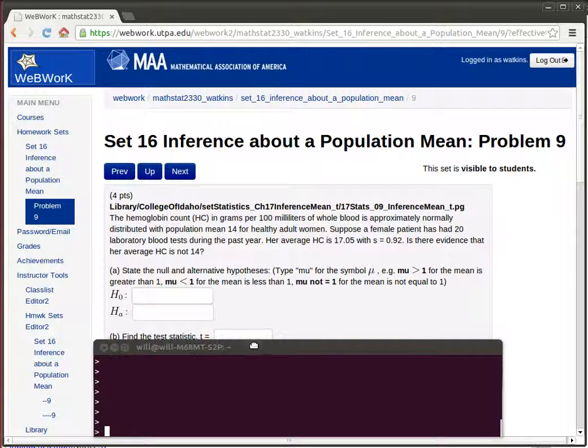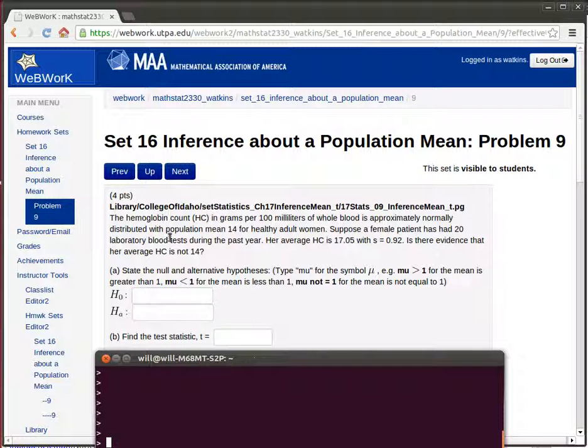Here the problem is talking about some hemoglobin count that is normally distributed with the population mean. We know the population mean for healthy adult women. Suppose that a female patient had 20 laboratory tests during the past year and her average was such and such. Is there evidence that her average hemoglobin count is not 14, it's not the same as what that population is?